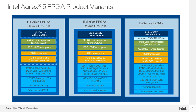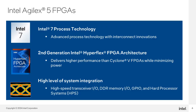The Agilex 5D series is optimized for performance and power efficiency, ideal for various applications across multiple markets. This series is manufactured using Intel 7 technology and offers transceiver rate operations of 17 Gbps and 28 Gbps. The Intel Agilex 5 product family delivers, on average, 50% higher fabric performance and up to 42% lower total power consumption compared to previous-generation Intel FPGAs.